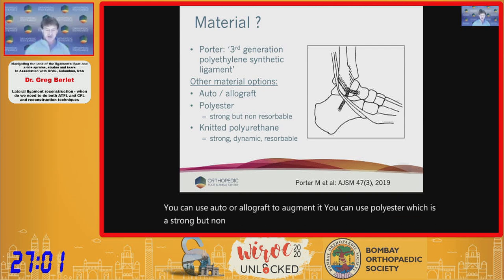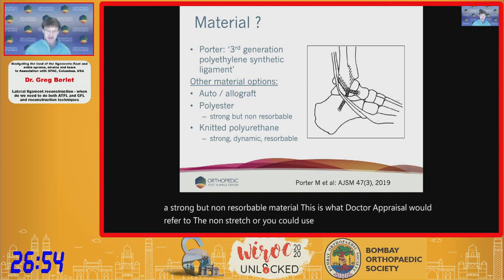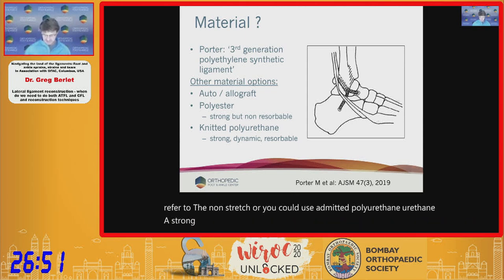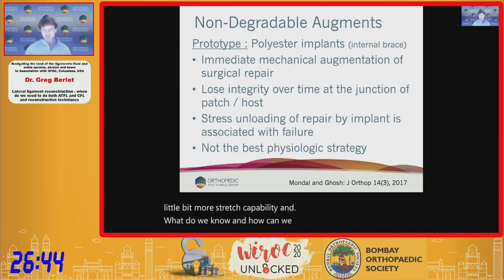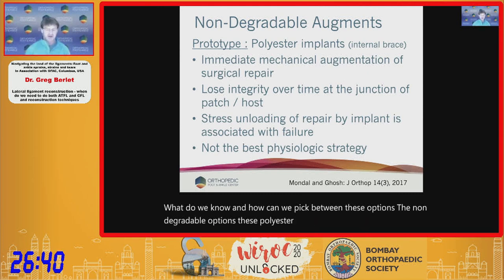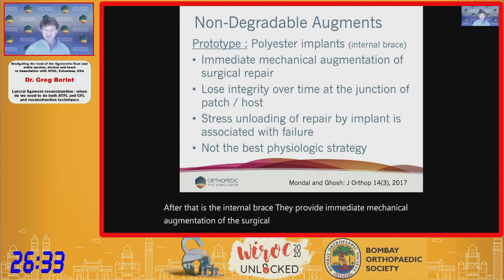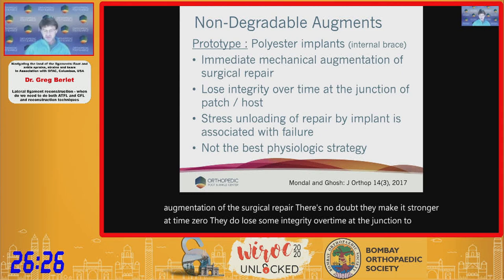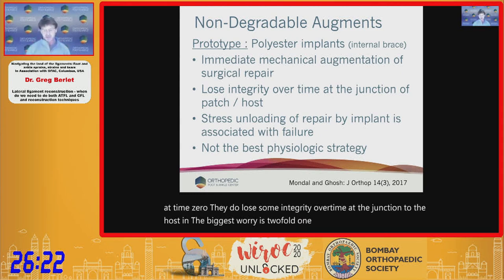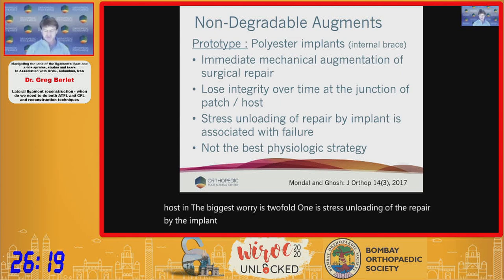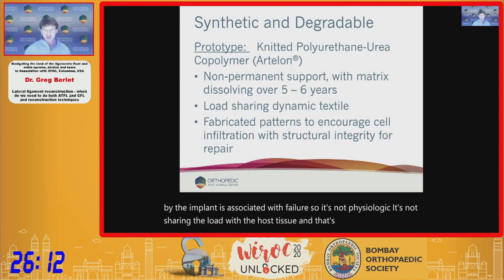Augment material options include auto/allograft, polyester (strong but non-resorbable — the non-stretch option), or knitted polyurethane (strong, dynamic, resorbable, with more stretch capability). Non-degradable implants like polyester — the prototype being the internal brace — provide immediate mechanical augmentation and make the repair stronger at time zero, but they lose integrity over time at the host junction. The biggest concern is stress unloading of the repair by the implant, which is not physiologic and is associated with failure.